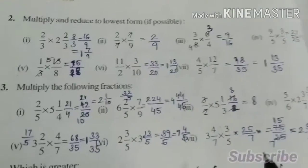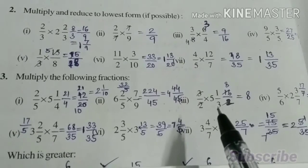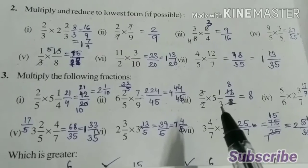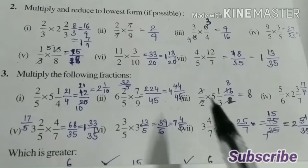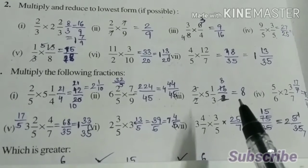Now third part: 3 by 2 into 5 1 by 3. So 3 5s are 15 plus 1, 16 by 3. We can cancel these 3. So answer will be 16 by 2, that is equal to 8.